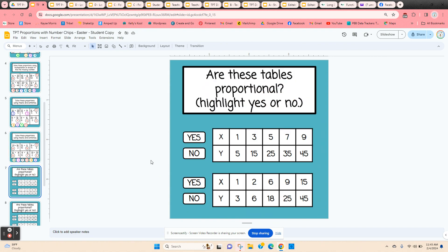Then they're going to be looking at tables. All they have to do is highlight yes or no. Are these proportional tables? The x to the y have to be the same in the same proportion. They need to be equivalent ratios.